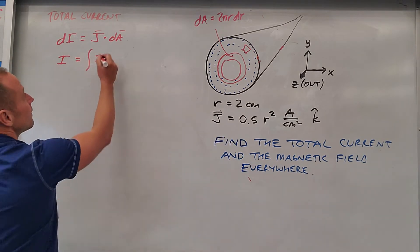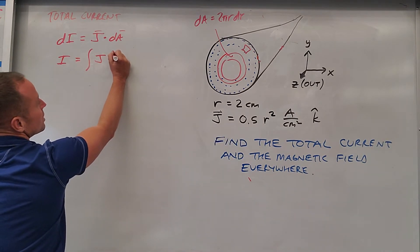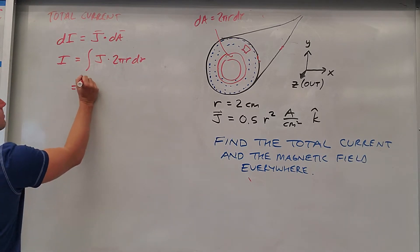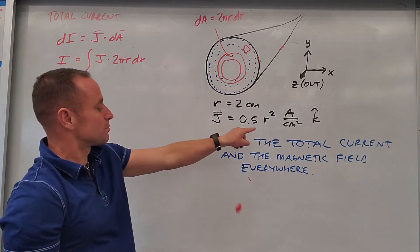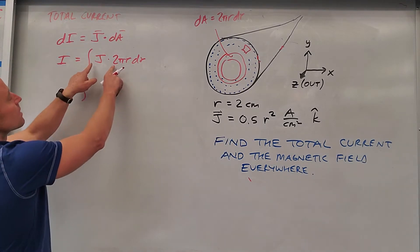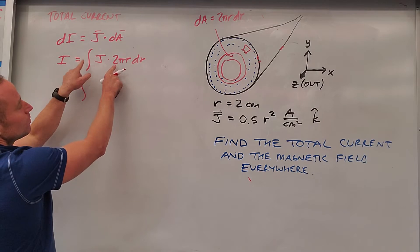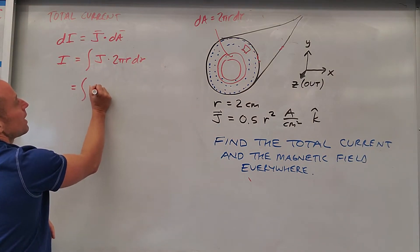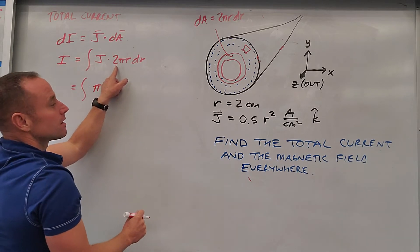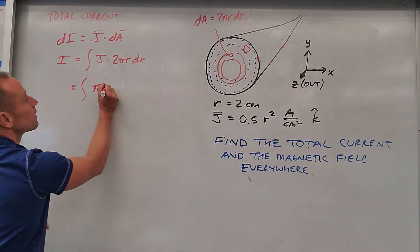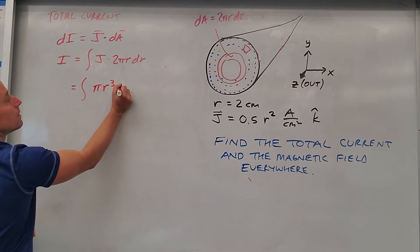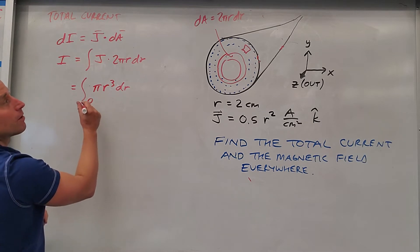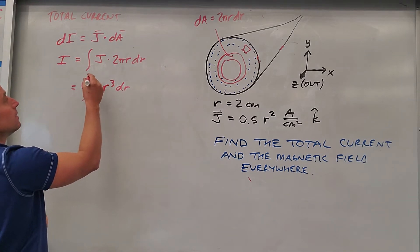So then all we have to do to get the total current is multiply j by 2 pi r dr. So let's do it. So j itself is 0.5 r squared. So the 0.5 and the 2 will cancel each other out, so I'm not even going to bother with them. And so then what we'll have is pi times r cubed dr.